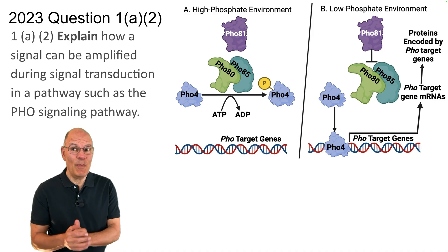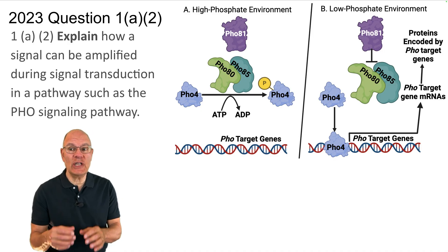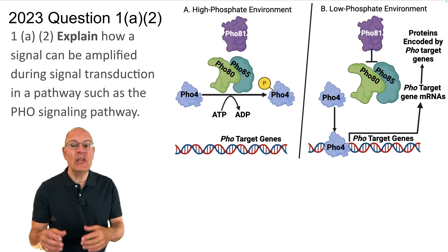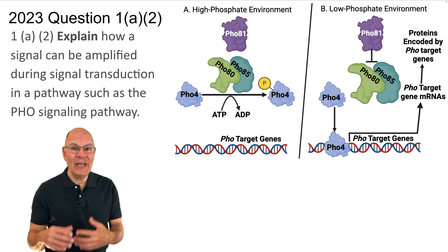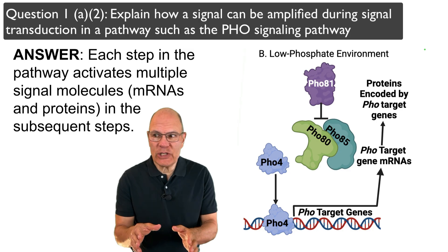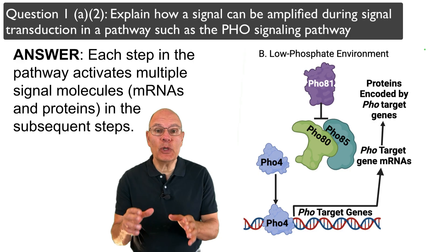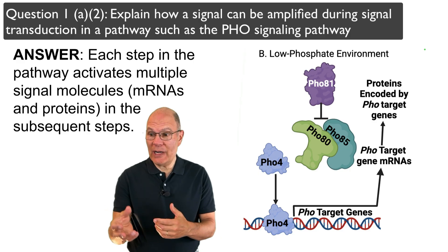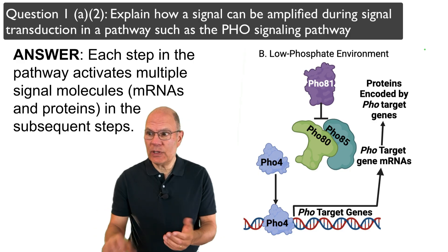Question 1a, Part 2: Explain how a signal can be amplified during signal transduction in a pathway such as the FOX signaling pathway. Each step in the pathway activates multiple signal molecules, mRNAs, and proteins in the subsequent steps.